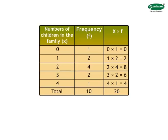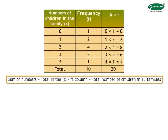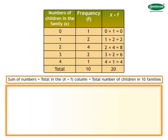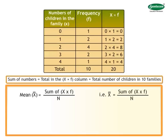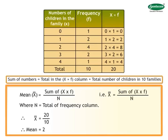Now, how do we find the total number of children in 10 families? Sum of the numbers in X into F column is equal to total number of children in 10 families. To calculate mean, use the formula: Mean or X bar is equal to sum of X into F upon N, where N is equal to total of frequency column. Therefore, X bar is equal to 20 upon 10. Therefore, mean is equal to 2.